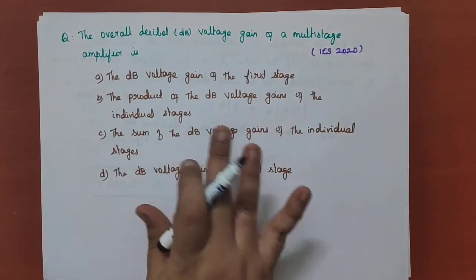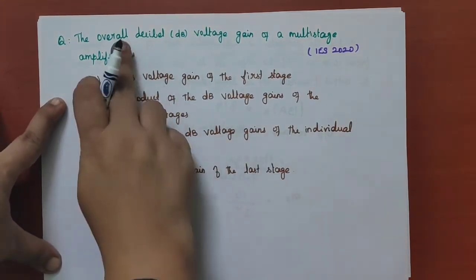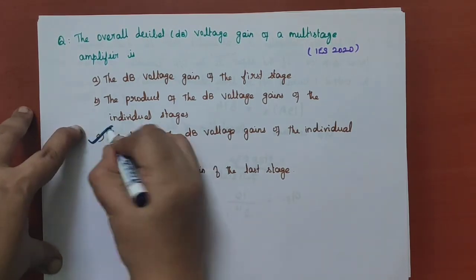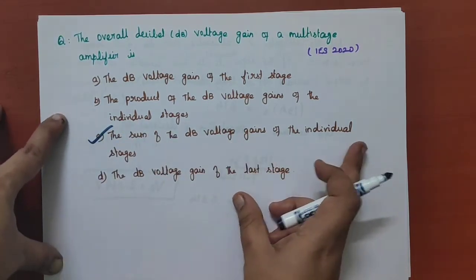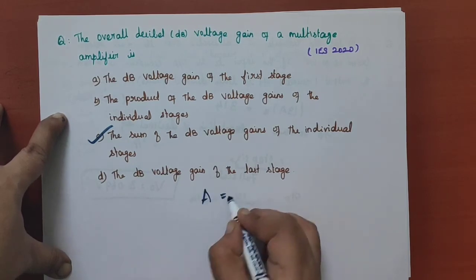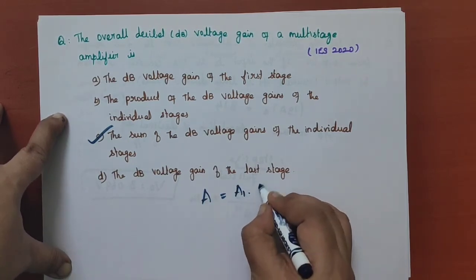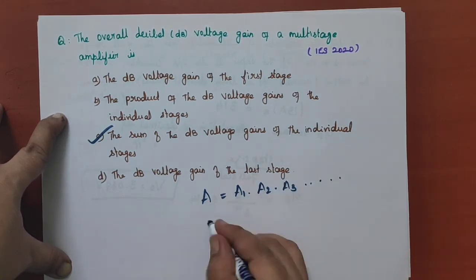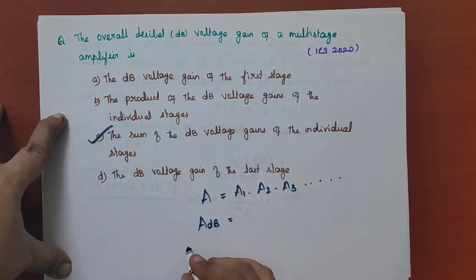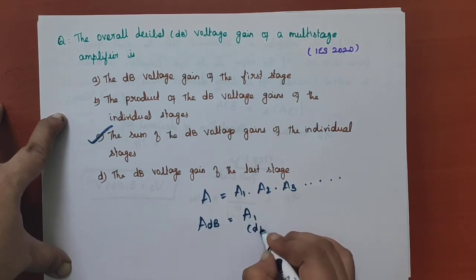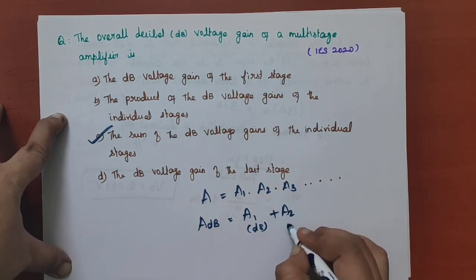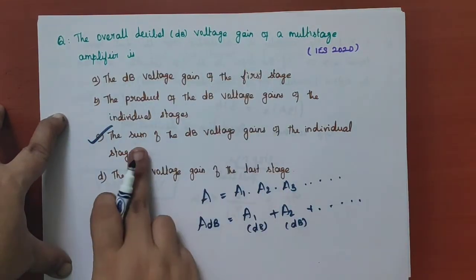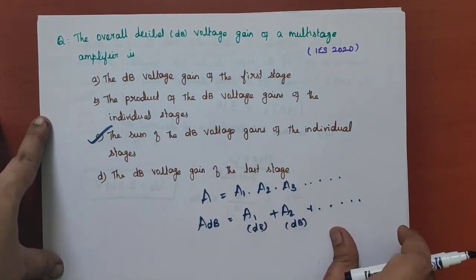The next question: the overall decibel voltage gain of a multistage amplifier. The overall gain equals A1 times A2 times A3 — that is, multiplication of the individual gains. When converted into decibel form, the overall decibel gain equals A1 in dB plus A2 in dB, and so on. So the overall decibel voltage gain is the sum of the decibel voltage gains of the individual stages.